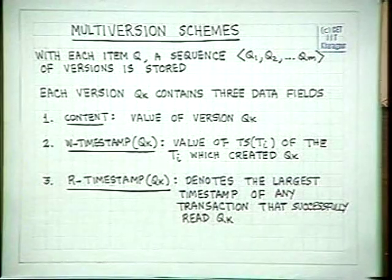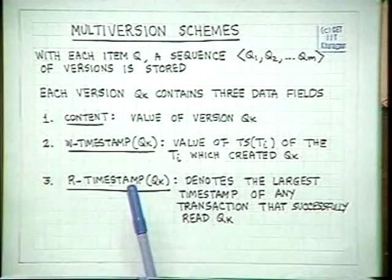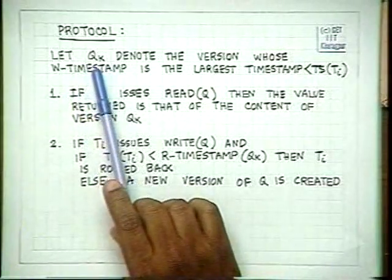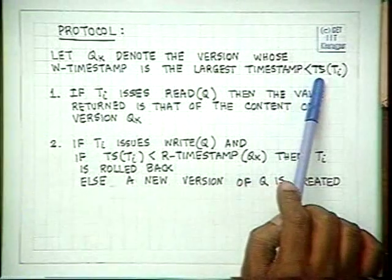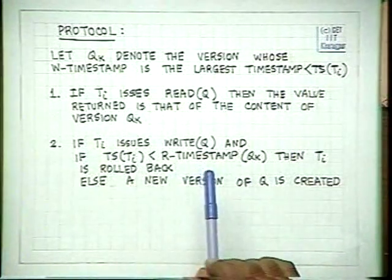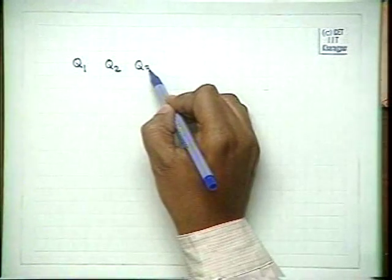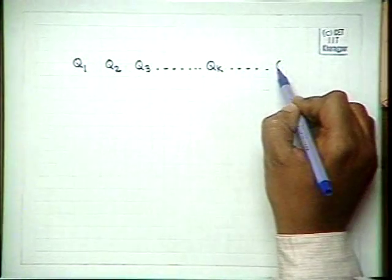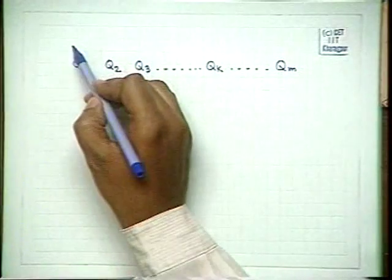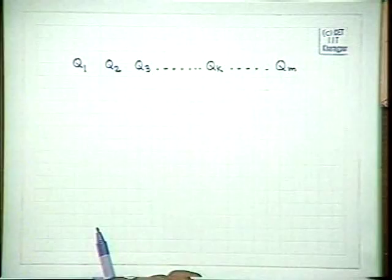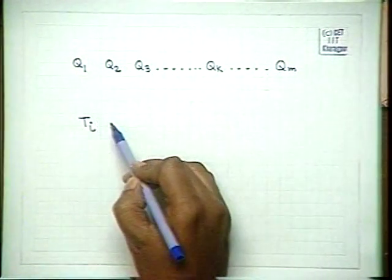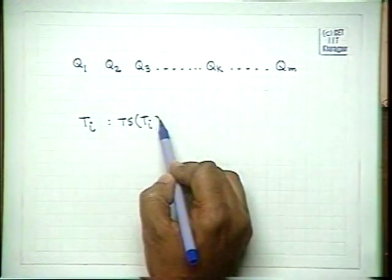Now the question is: when a particular transaction issues a read, which version will it read? The multiversion protocol is as follows. Let QK denote the version whose W-timestamp is the largest timestamp less than Ts(Ti). So if we have versions Q1, Q2, Q3, QK, QM, each with a W-timestamp and R-timestamp, and for transaction Ti we have a Ts(Ti) value, we find the version whose W-timestamp is the largest value still less than Ts(Ti).